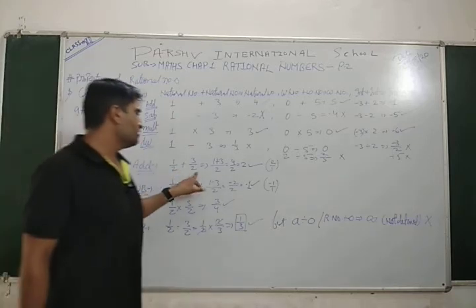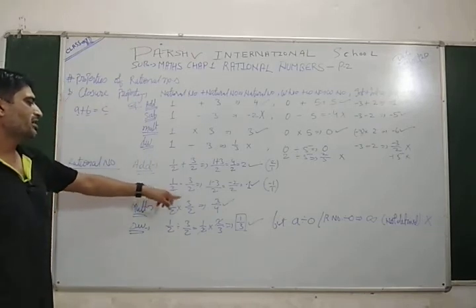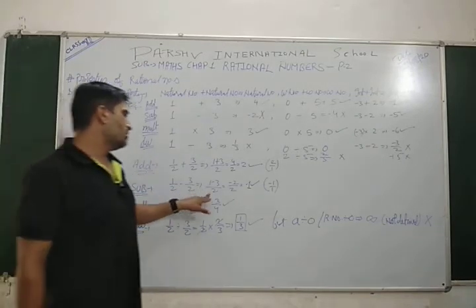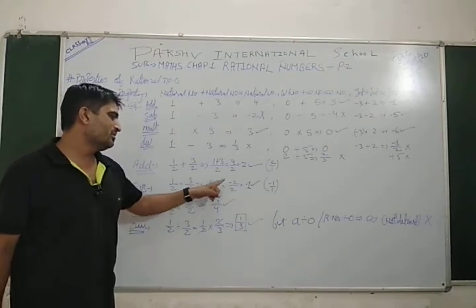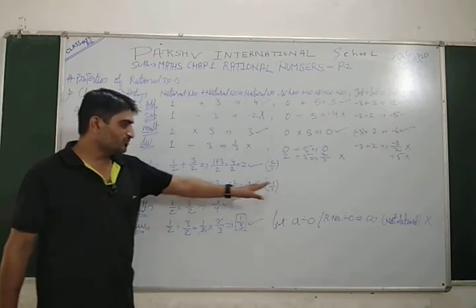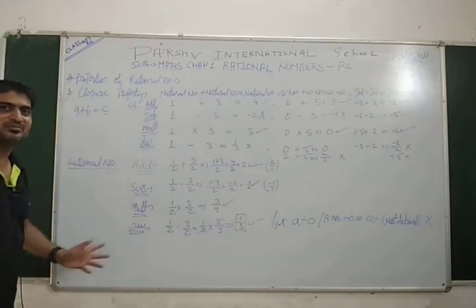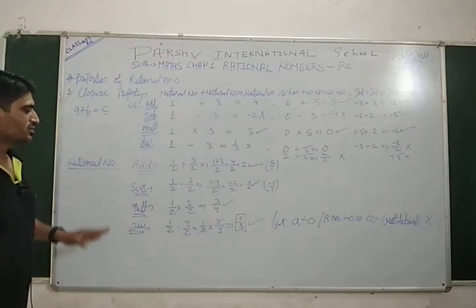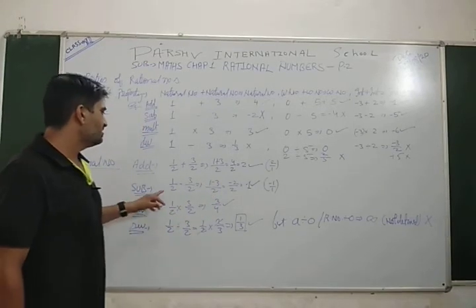The closure property is the rational number in the addition. If we look at the fraction of the rational number, 1 by 2 minus 3, 3 by 3 minus 3, minus 1, minus 4, minus 1 by 1. If we look at the rational number, minus 0 and minus 1. So, this is the rational number.